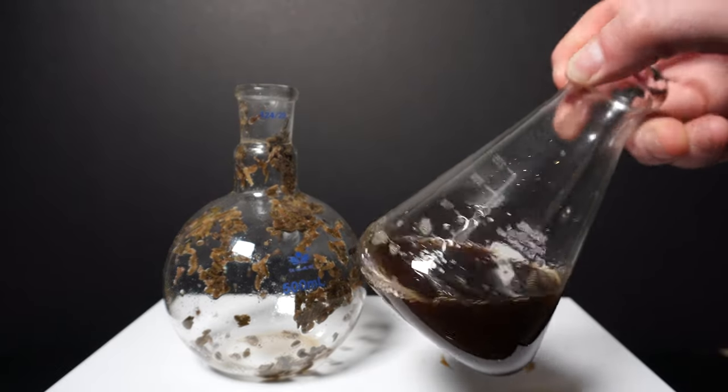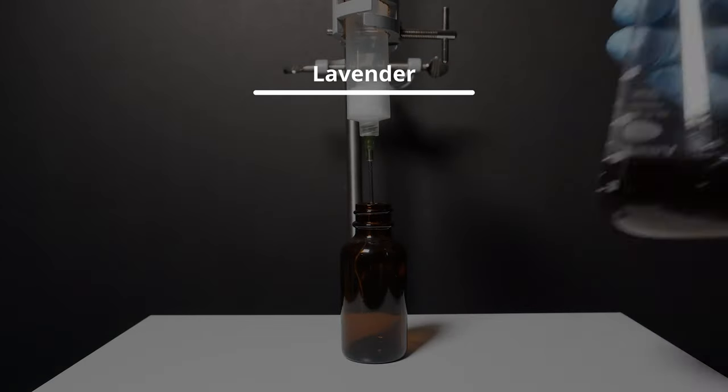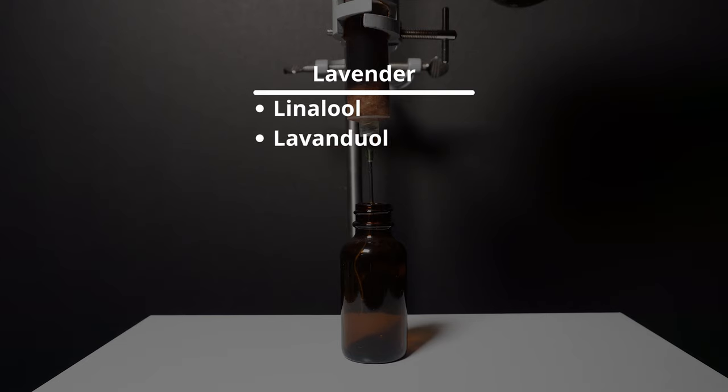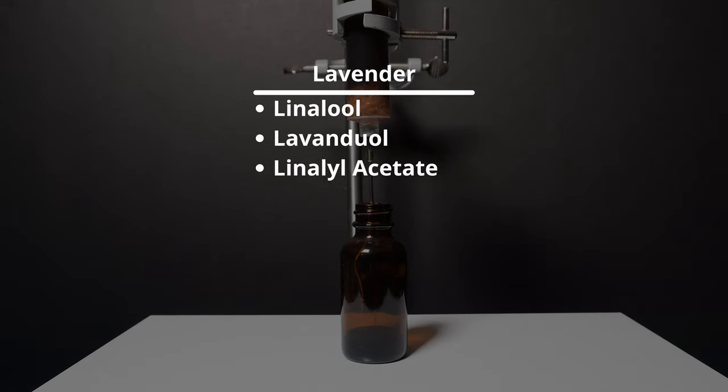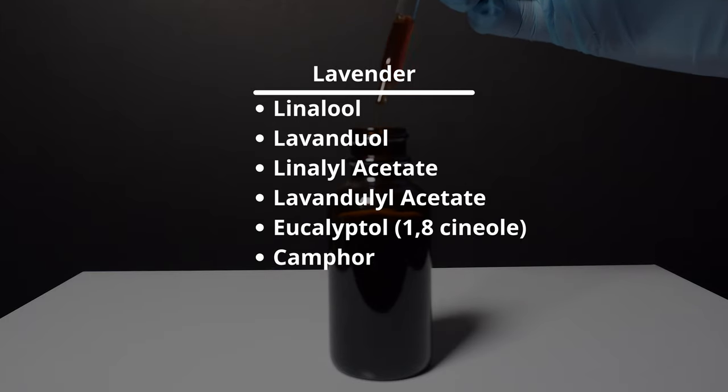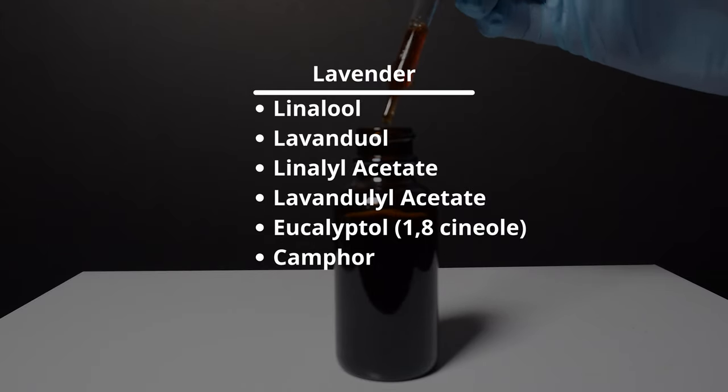Lavender oils contain a variety of different compounds that combine together to create the smell that we associate with lavender. Some of the compounds are linalyl, lavandalyl, linalyl acetate, lavandalyl acetate, eucalyptol, and camphor oil. Ideally we will have a mixture of all of these oils at the end of our process. So let's get started.